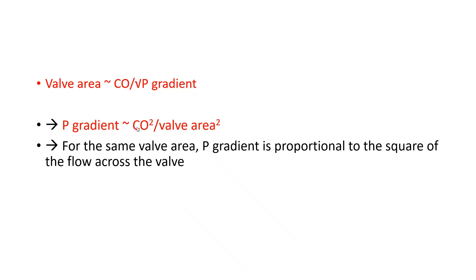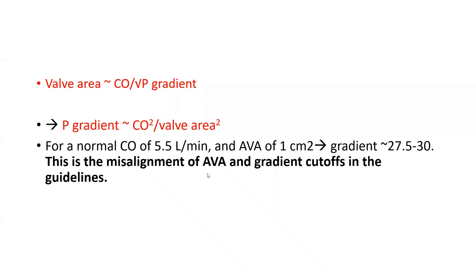Those are two important consequences illustrating the extreme flow dependence of the pressure gradient. A third consequence: mixed aortic stenosis and aortic insufficiency. With AI plus AS, flow across the valve may be 50–100% higher, causing a higher pressure gradient for the same degree of stenosis — increasing the gradient across the aortic valve.